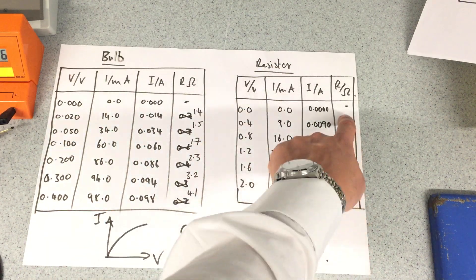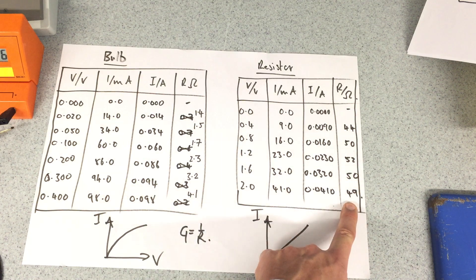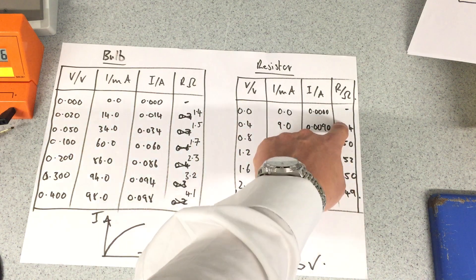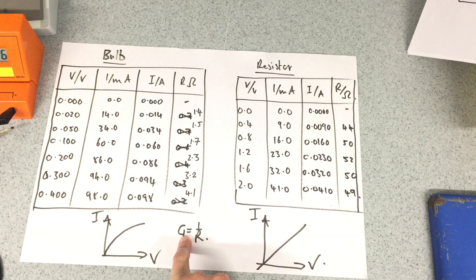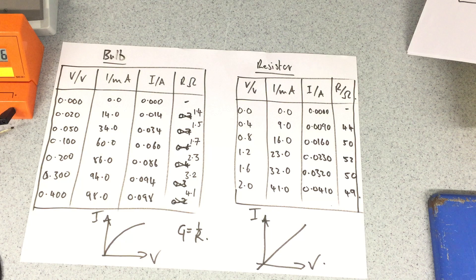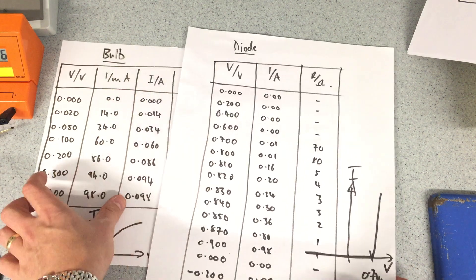What happens with the resistor? Same again. We have a pretty constant resistance. When you do plot, it'll be a nice straight line. Again, gradients one over the resistance.